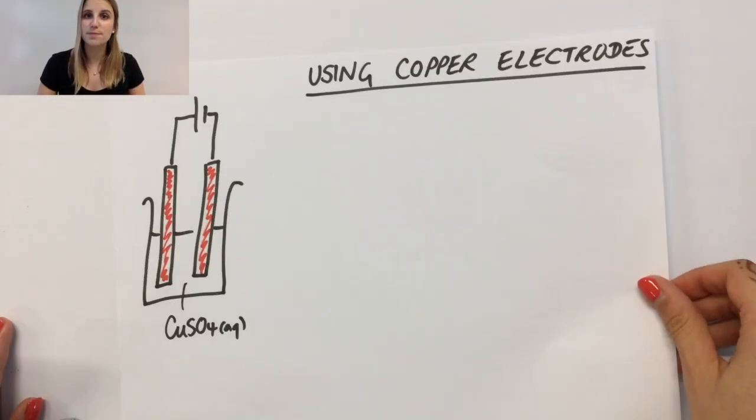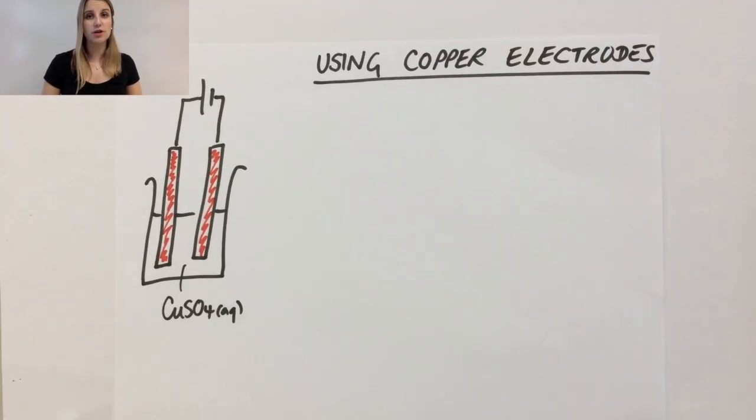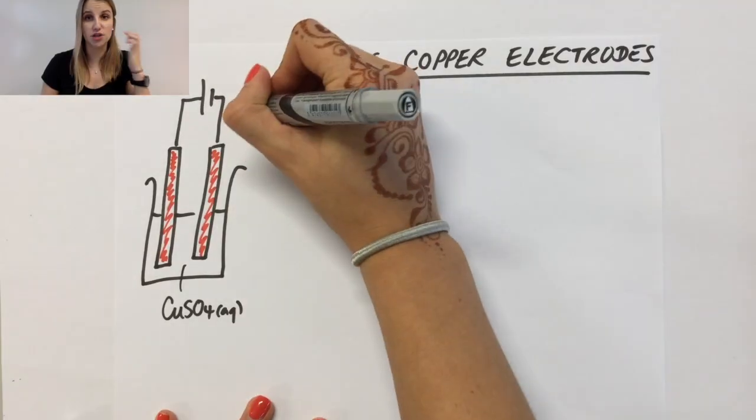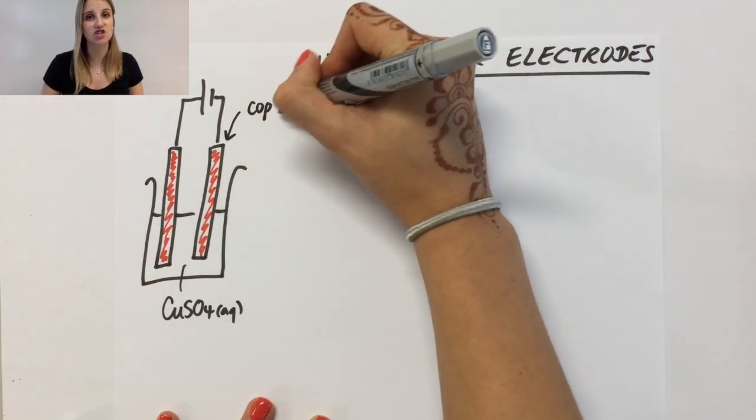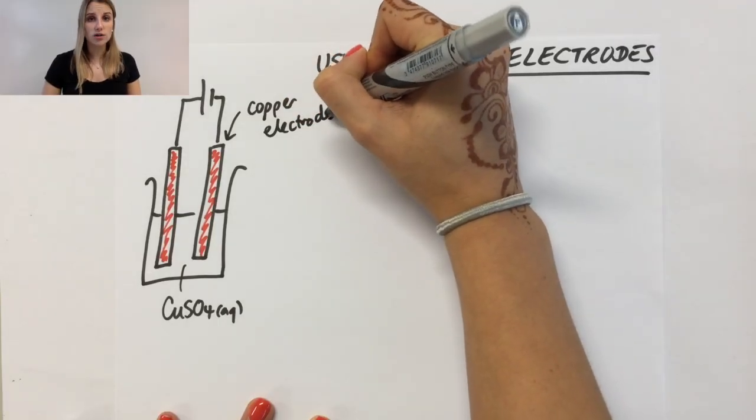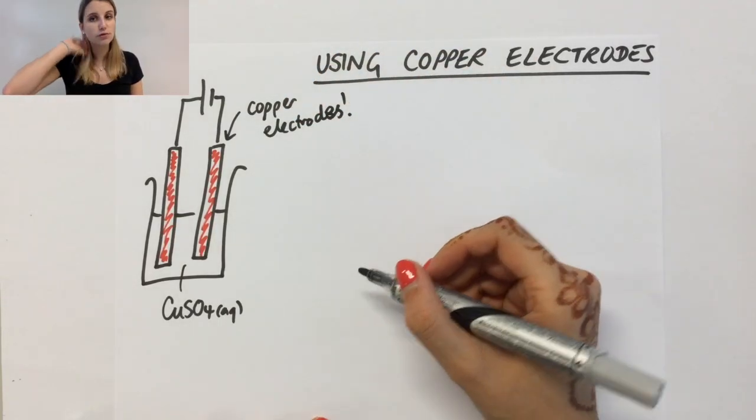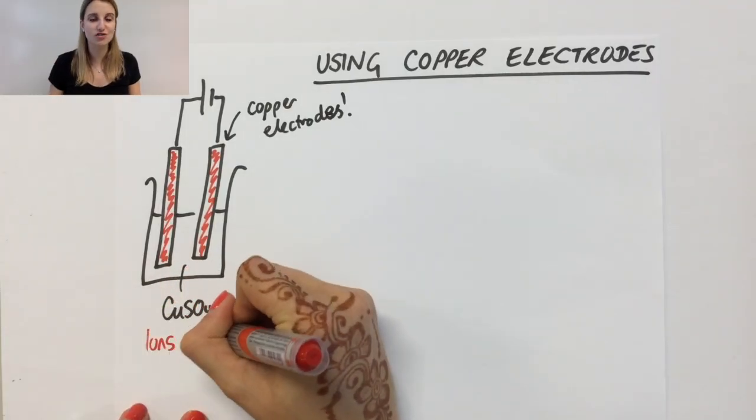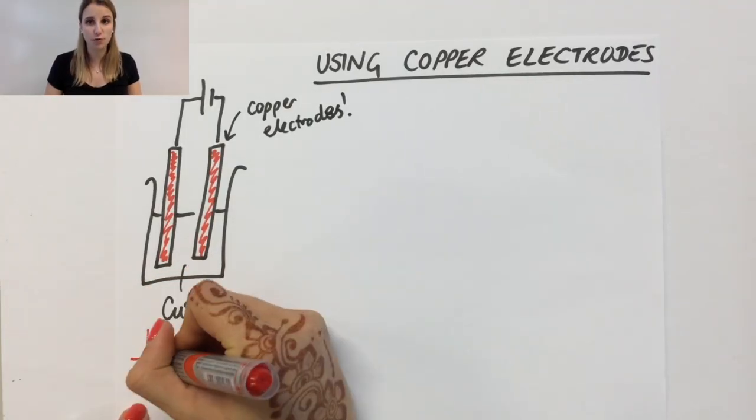Another example that you need to be aware of is what happens when you have copper electrodes being used instead of the graphite electrodes. The ions are exactly the same as before: the copper, the sulfate, the hydrogen, and the hydroxide, all present just like before.